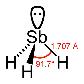Stibine is used in the semiconductor industry to dope silicon with small quantities of antimony via the process of chemical vapor deposition. It has also been used as a silicon dopant in epitaxial layers. Reports claim the use of antimony-3-hydride as a fumigant, but its instability and awkward preparation contrast with the more conventional fumigant phosphine.